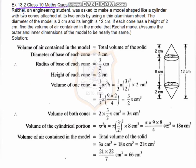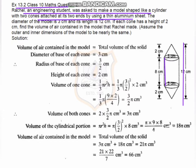Question number two: Rachel, an engineering student, was asked to make a model in the shape of a cylinder with two cones attached at both ends, using a thin aluminum sheet. The total height of the model is 12 centimeters. The height of each cone is 2 centimeters, so there is 2 on each side.